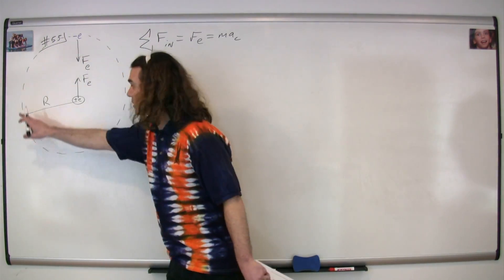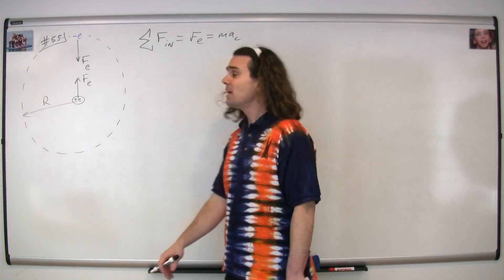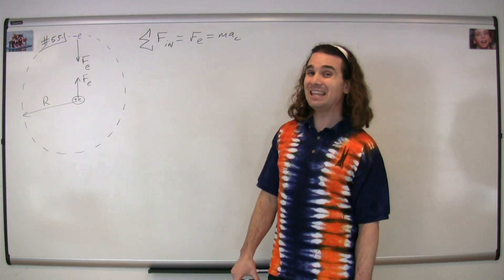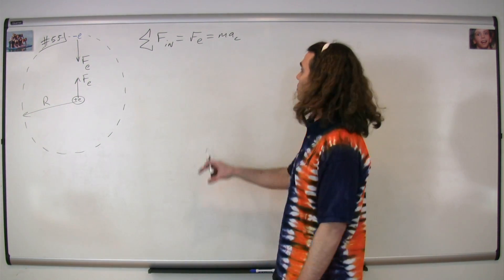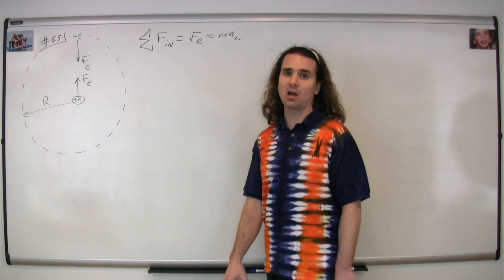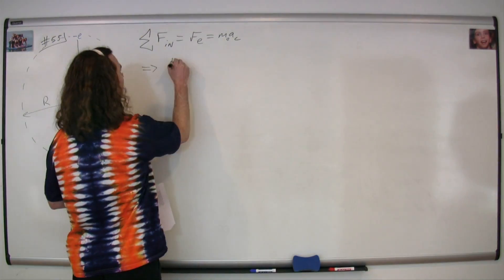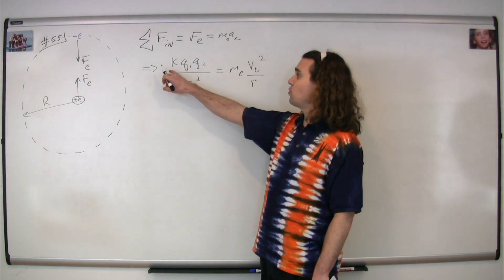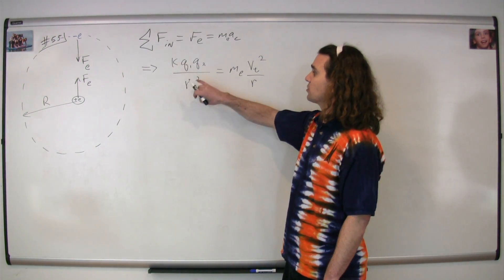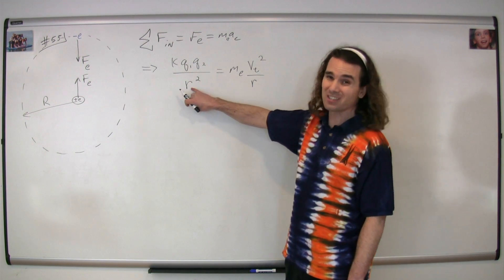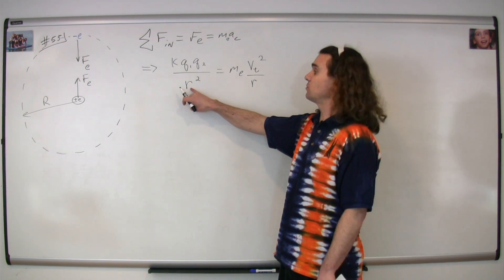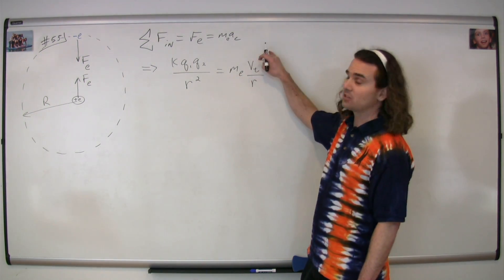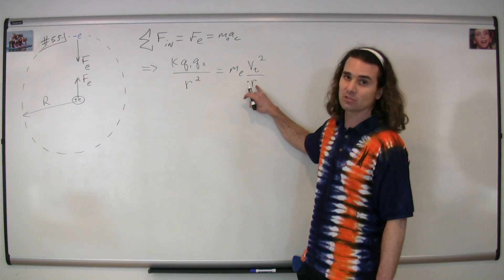We sum the forces in the n-direction because the electron is moving in a circle, and the net force is always equal to mass times acceleration — specifically the centripetal acceleration — where the mass is the mass of the electron. Substituting in the equation for the electric force, or Coulomb's force, we have Coulomb's constant times charge one times charge two divided by r squared, where r is the distance between the center of charges. That's equal to the mass of the electron times the centripetal acceleration, which is the tangential velocity squared divided by the radius of the circle.